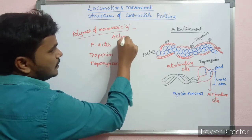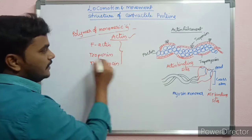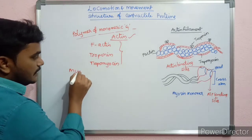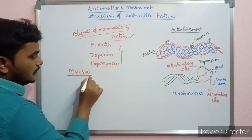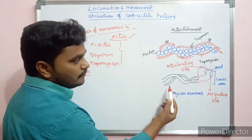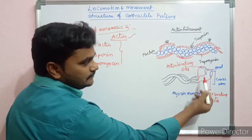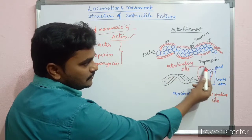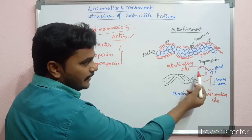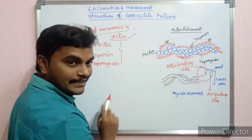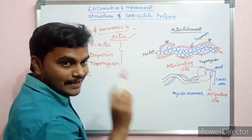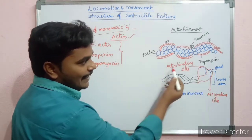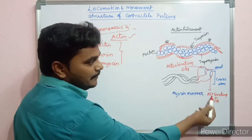Now looking at myosin — myosin is the other contractile protein. Myosin has a head region, a neck region, and a tail region. The head region contains the binding sites: one is the ATP binding site and the other is the actin binding site.